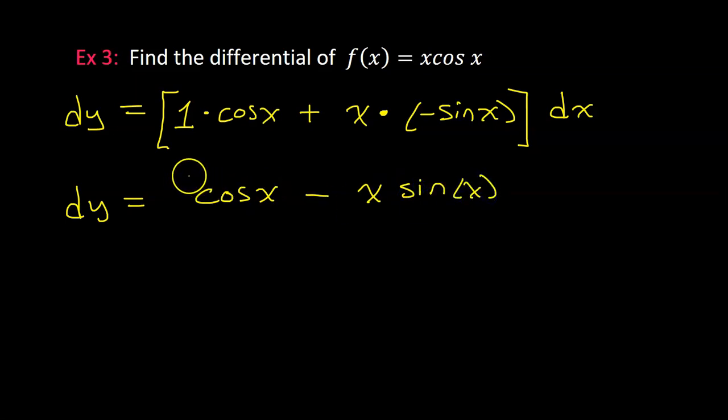So we will have minus x sine x. And let's go ahead and put parentheses around it, or brackets I guess, and put a dx on it. That's it.